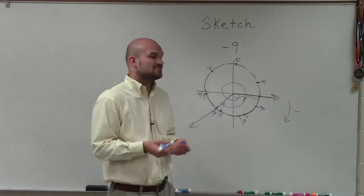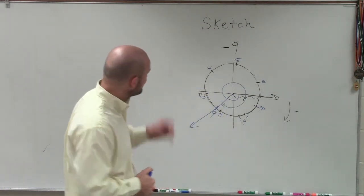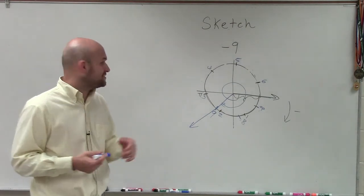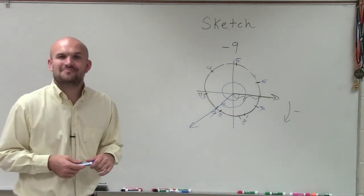And then this last radian would be 9, which I'm assuming is probably going to be somewhere, hopefully, if I did it right, in the third quadrant. So there you go, ladies and gentlemen. That is how you sketch negative 9 radians. Thanks.